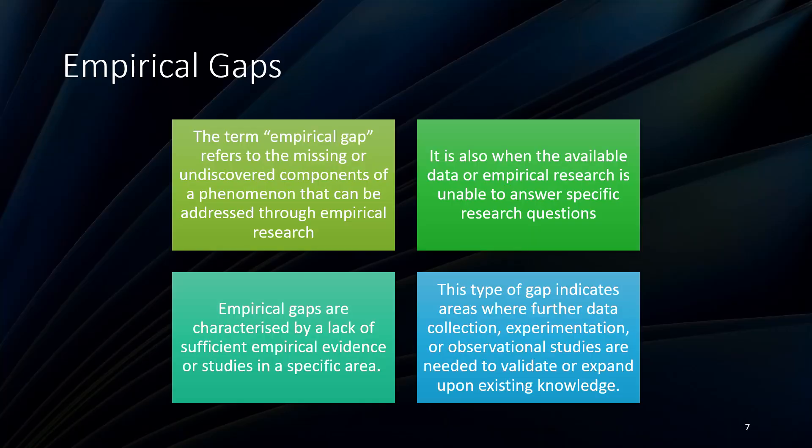The next type of research gap is empirical gaps. This is where there is missing information or missing components of a phenomenon that can be addressed through empirical research. It also arises when the available data or empirical research is unable to answer specific questions. When conducting a literature review, if you observe that the available information or data cannot answer the specific questions, that is how you identify an empirical gap. They are often characterized by a lack of sufficient empirical studies, and as such, new studies are needed to validate or expand upon existing knowledge.